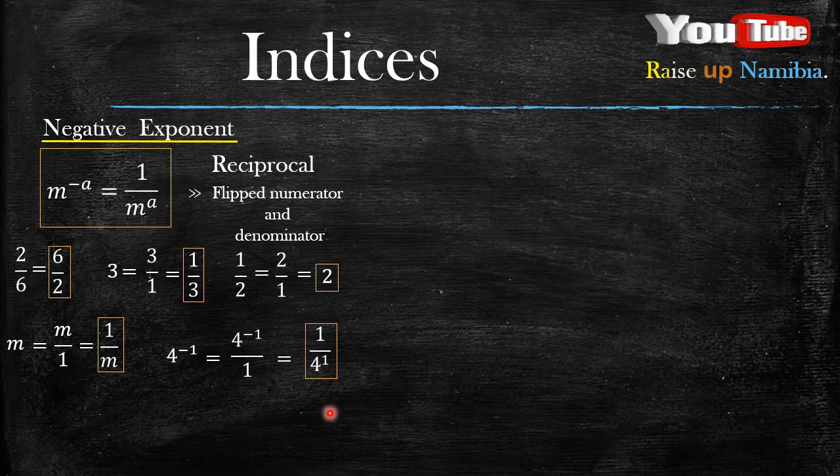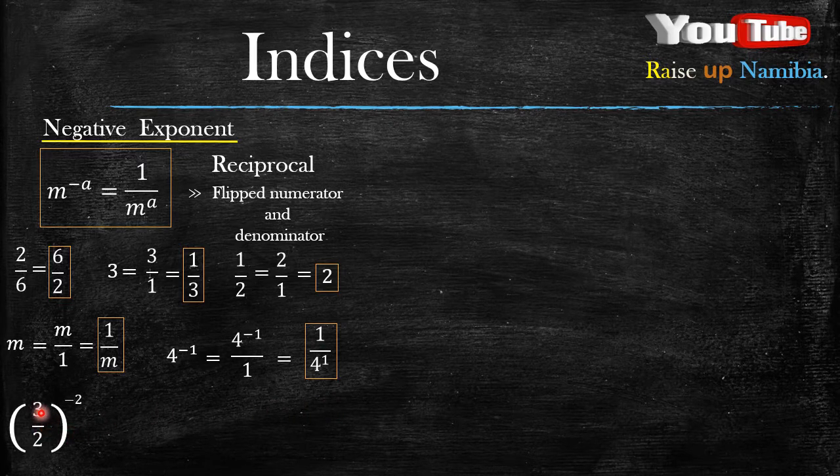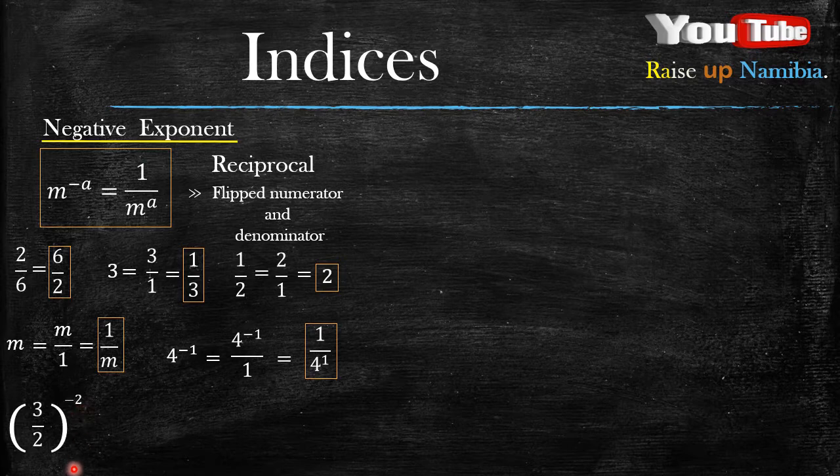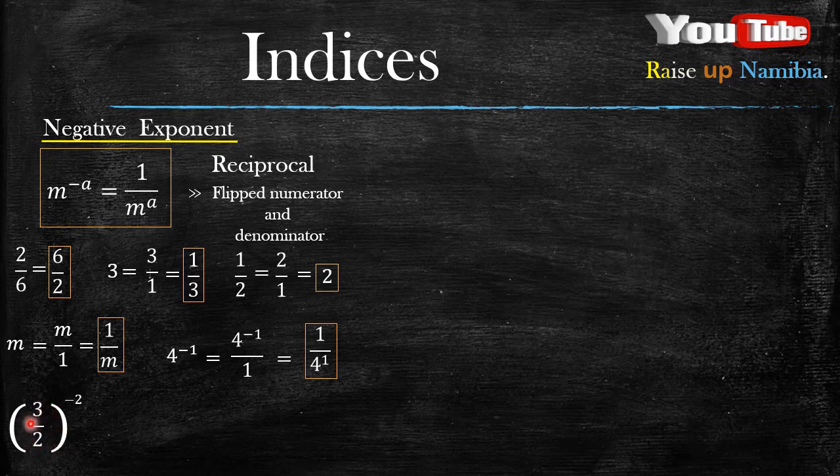So, how about when you have, like you have it already as a fraction. And then that fraction is raised to the power, which is a negative, which in this case it's negative 2. How do you deal with this? Now, number 1. Ignore the exponent for now. Work with the base. Now remember our base here is within the bracket. It's a 3 over 2.